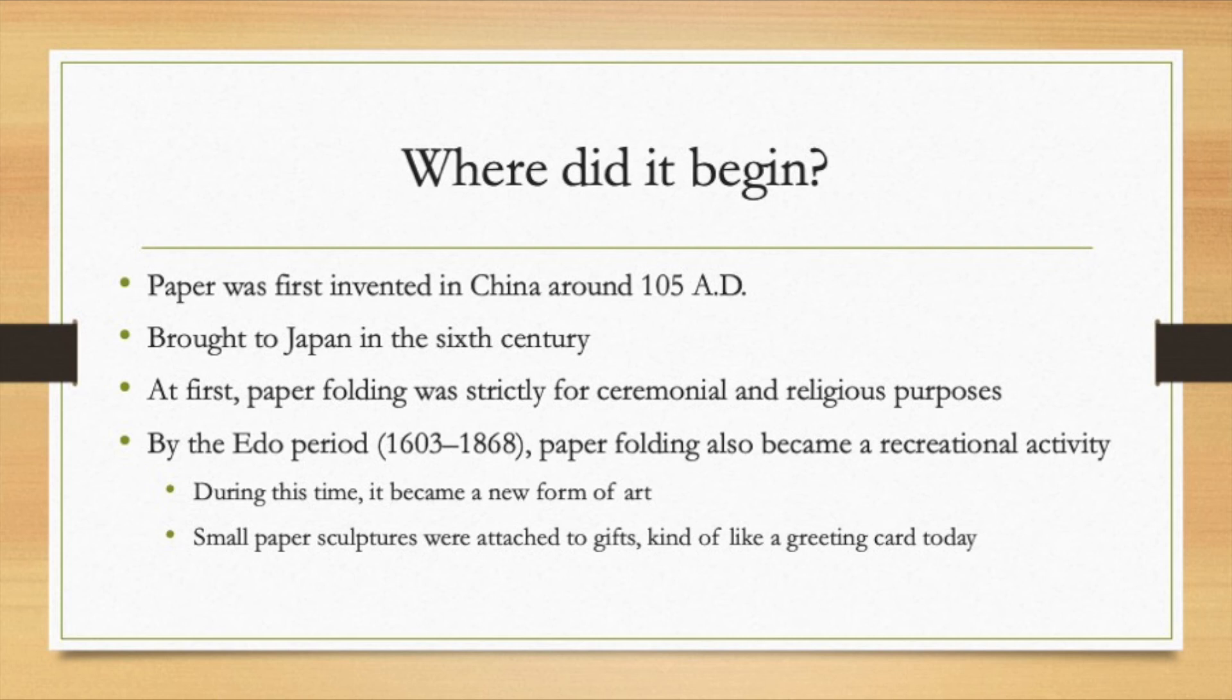Paper was first invented in China around 105 AD and was brought to Japan by monks in the sixth century. Initially paper was a very nice luxury item, so not a lot of people were able to have it themselves. This meant that paper folding in ancient Japan was strictly for ceremonial and often religious purposes. By the Edo period, paper was much more available and affordable for everyone, so paper folding in Japan became recreational as well and it came to be regarded as a new form of art. People created origami sculptures and attached them to gifts, kind of like attaching greeting cards to gifts today.